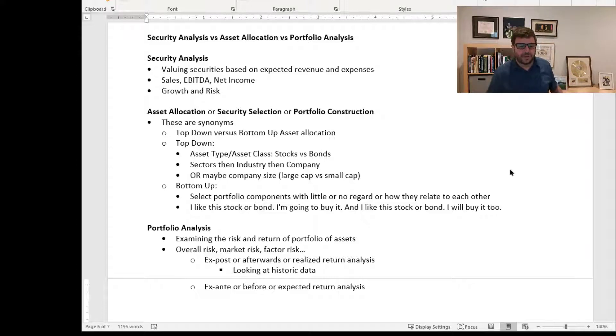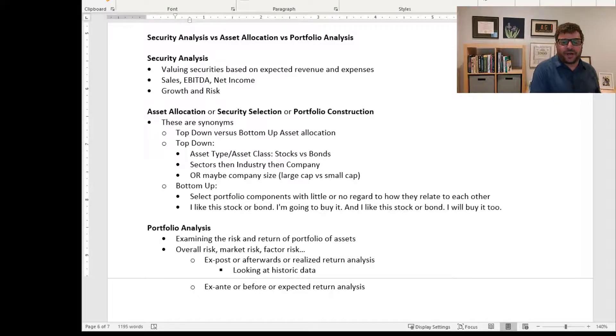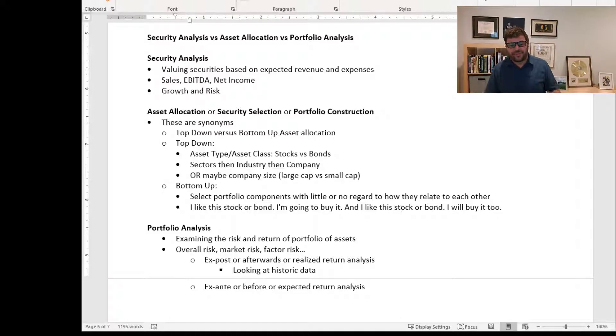Bottom-up selection means selecting portfolio components with little or no regard to how they relate to each other. 'I like this stock or bond, I'm going to buy it. I like this stock or bond too, I'll buy it too.' The portfolio is constructed from individual securities with little regard to how they relate to each other.